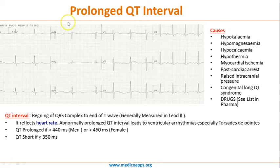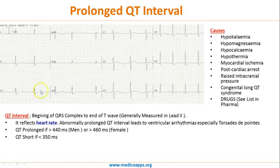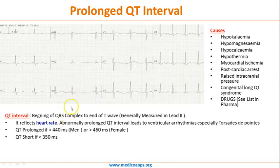Sometimes the rate, rhythm, and cardiac axis all appear normal — both vectors pointing up indicating normal axis — and the only finding is the prolonged QT interval, which you can identify from the ECG.